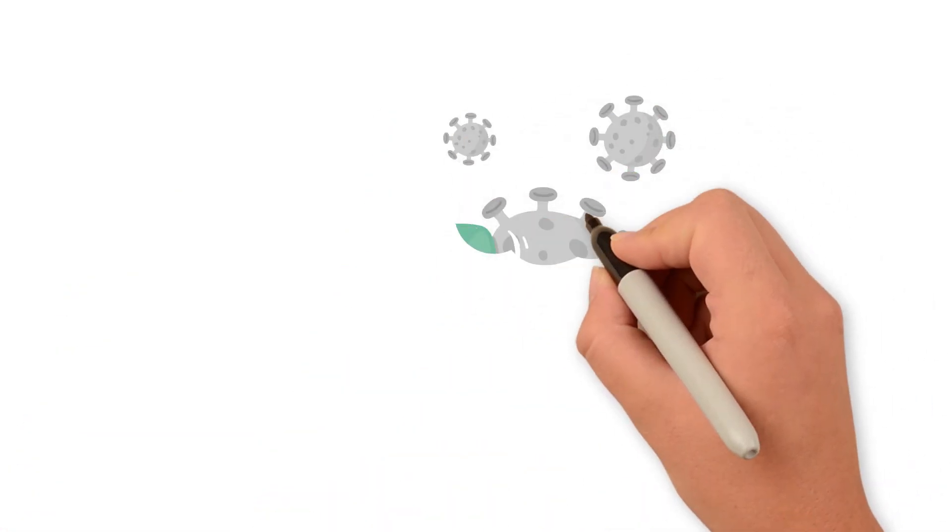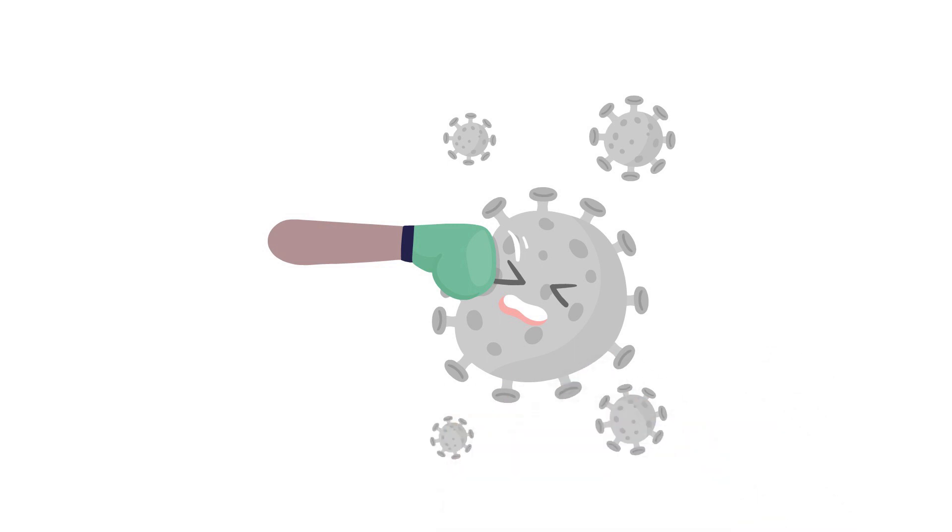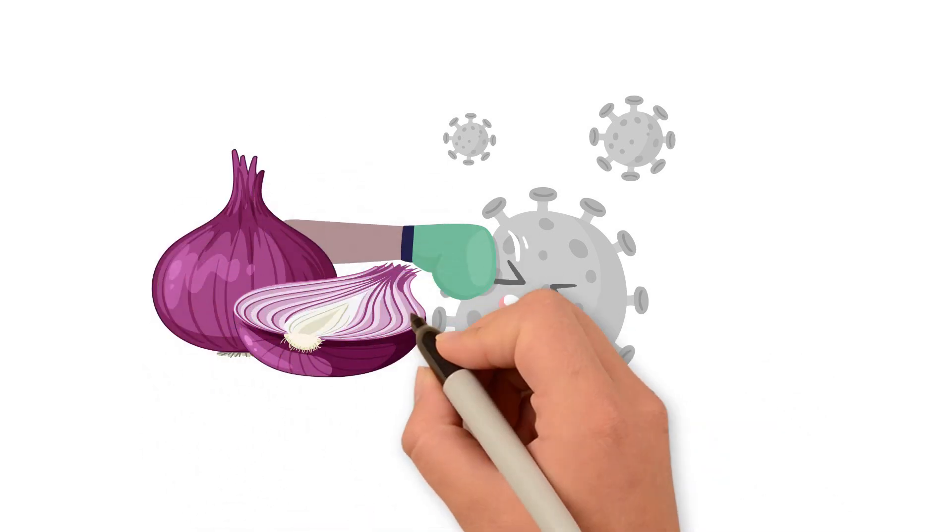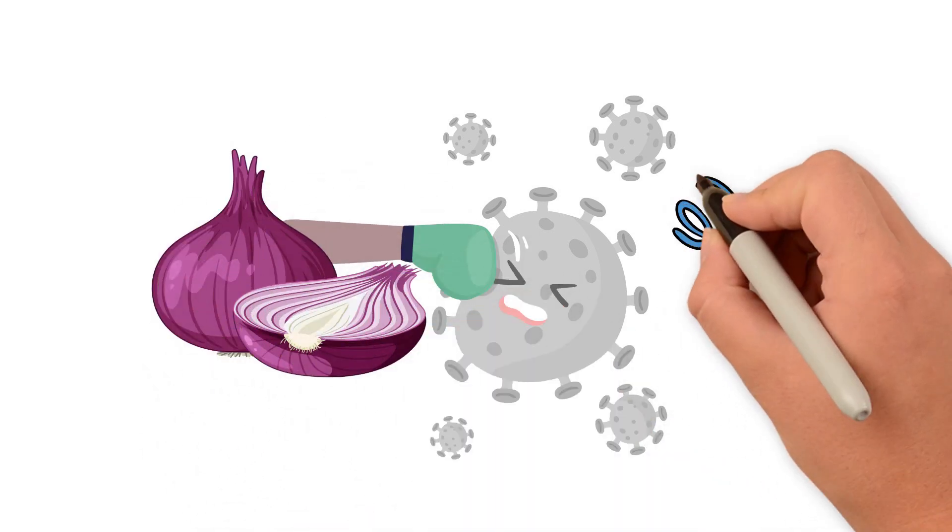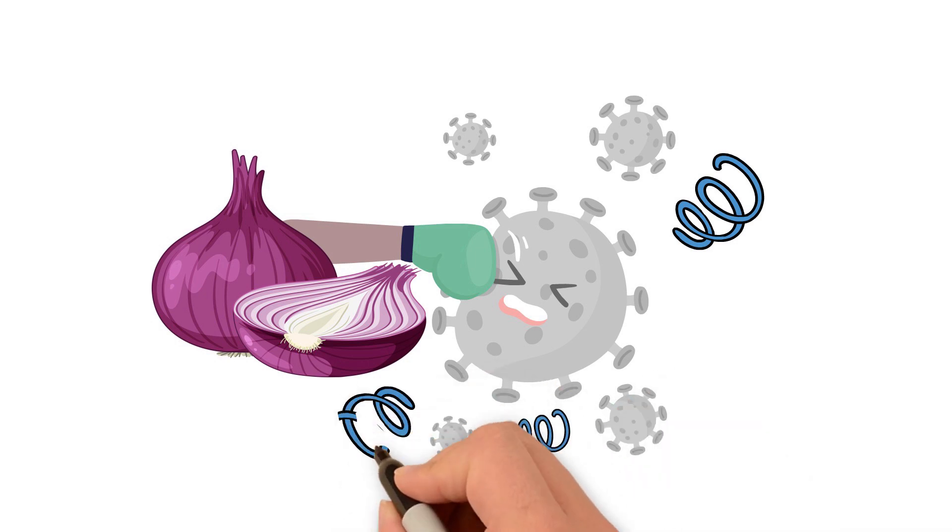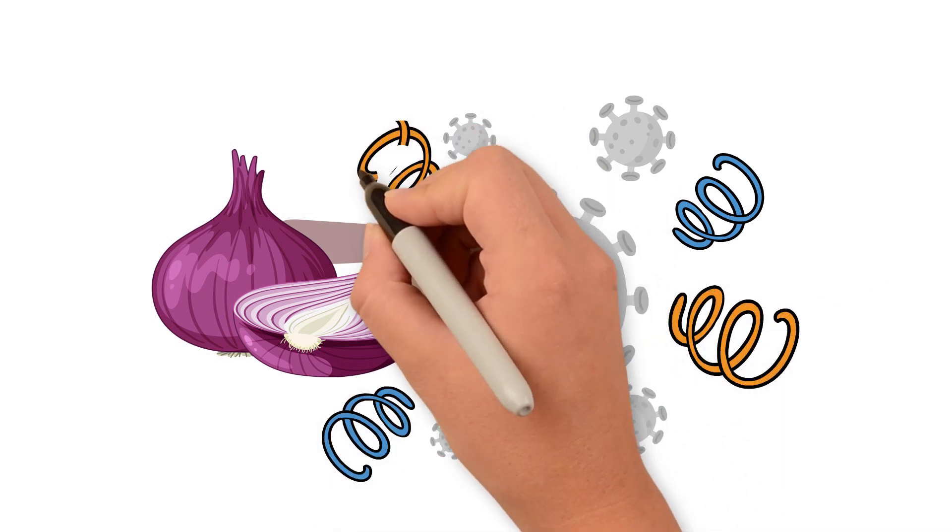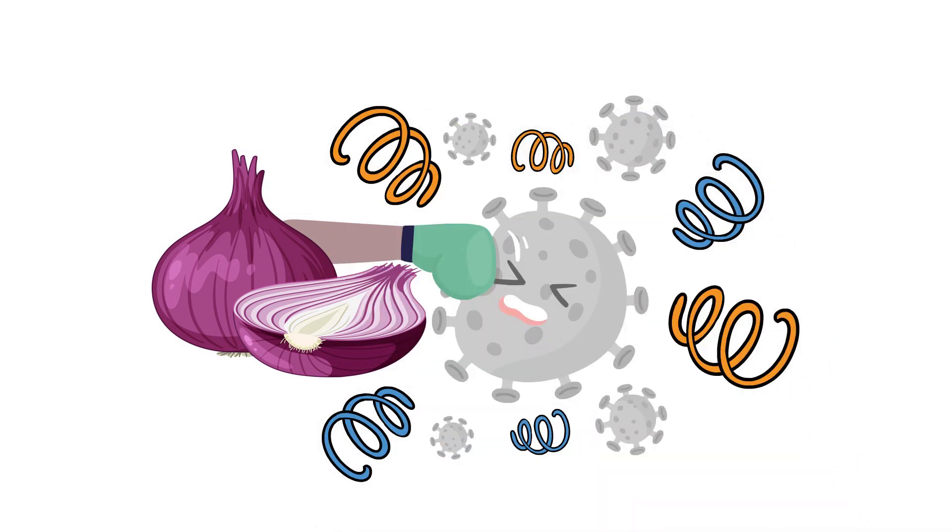Furthermore, onions contain enzymes that play a crucial role in breaking down viral proteins. These enzymes act as proteases, specifically targeting and degrading viral proteins essential for virus replication and survival.